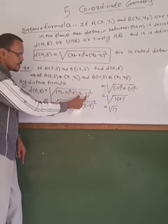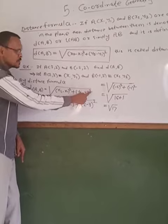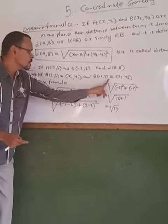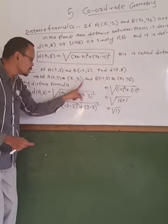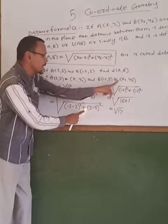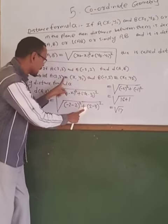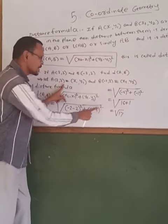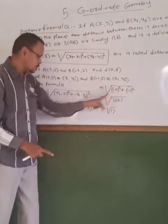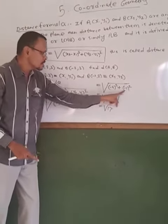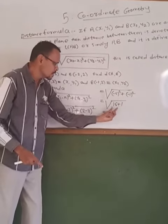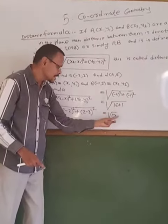Put the values: x2 is -2, so (-2-2)² plus y2 is 2, so (2-3)². That's (-2-2) equals -4, squared. 2-3 equals -1, squared. √[16 + 1], that is √17.